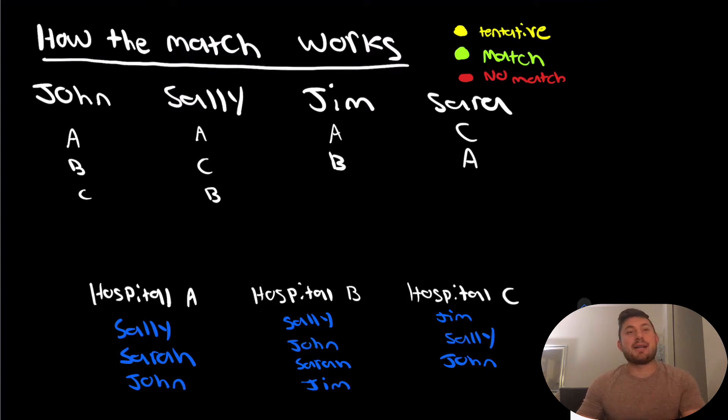However, this is a binding contract. And if you rank a program, you have to go there for residency. So if there is a school that you interview at and you really do not want to go to that program and you'd rather not match than go to that program, then it might be a situation where you actually don't add that program to your match list. Also, you should really only rank programs that you've interviewed at and gotten an interview from because schools are generally only going to rank applicants that they've actually conducted an interview with.